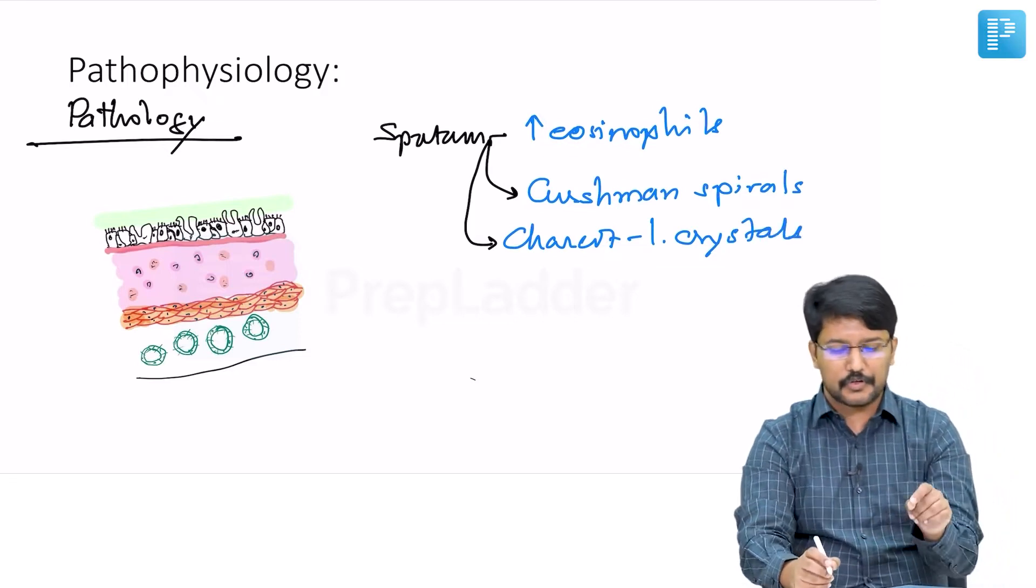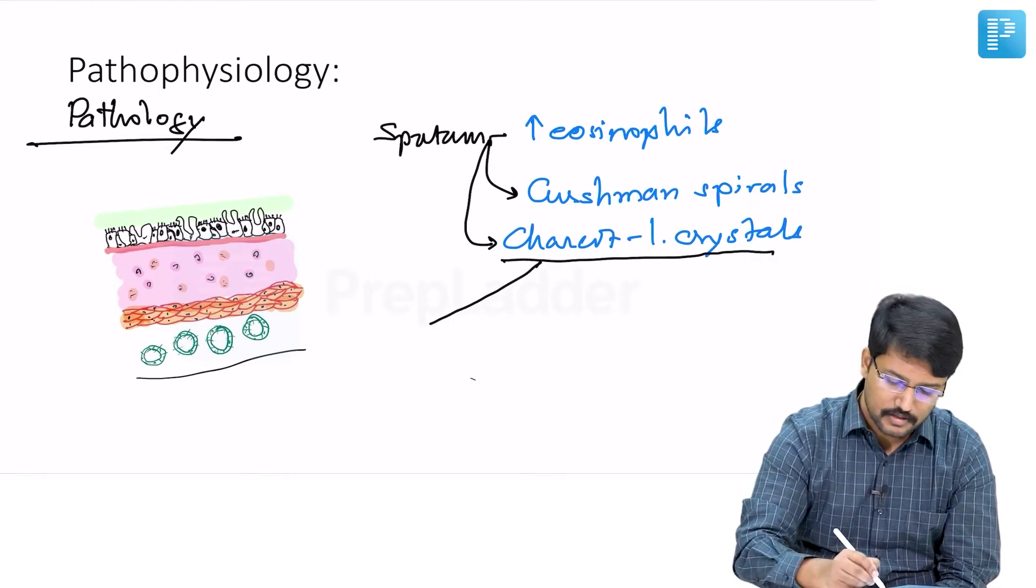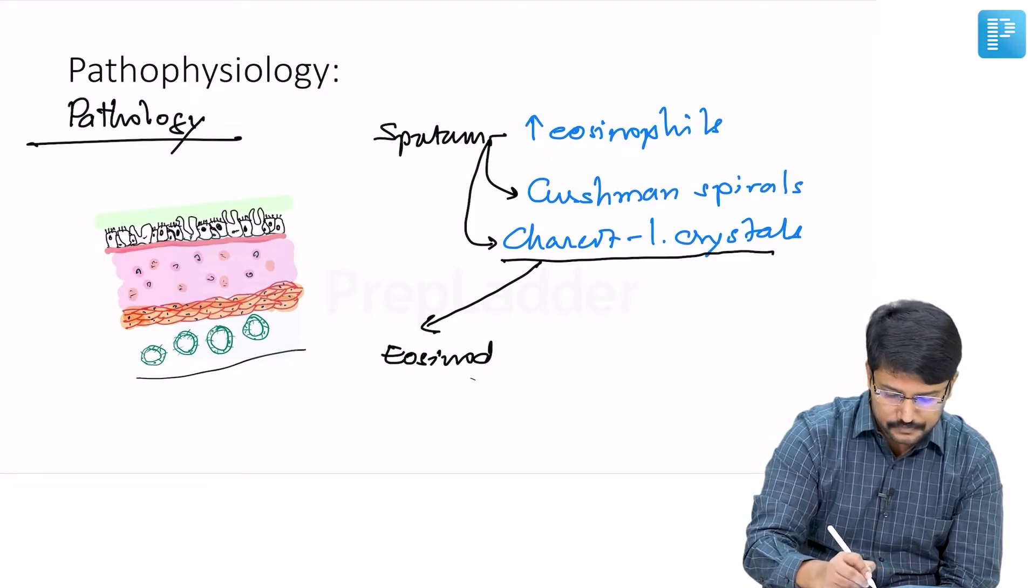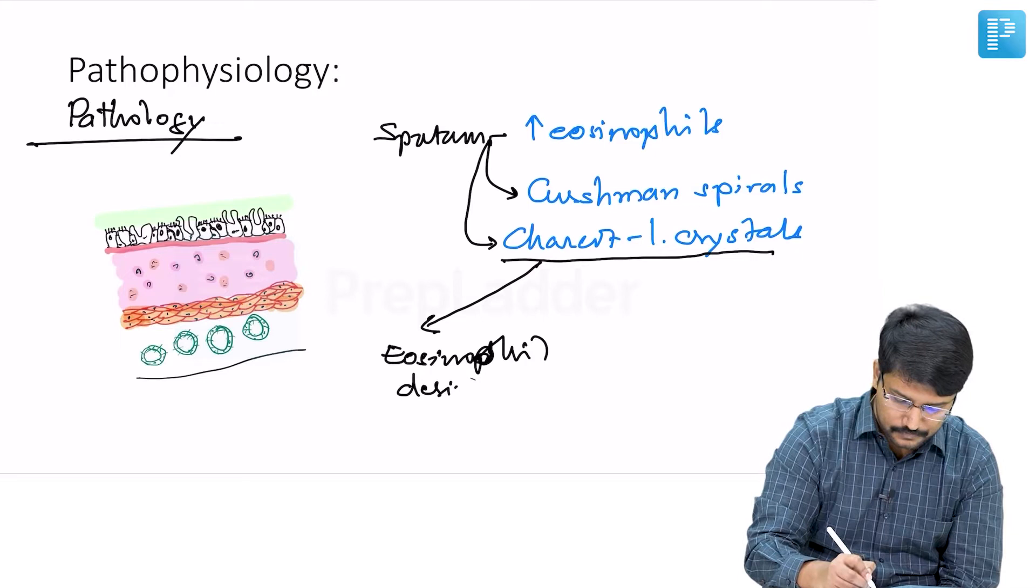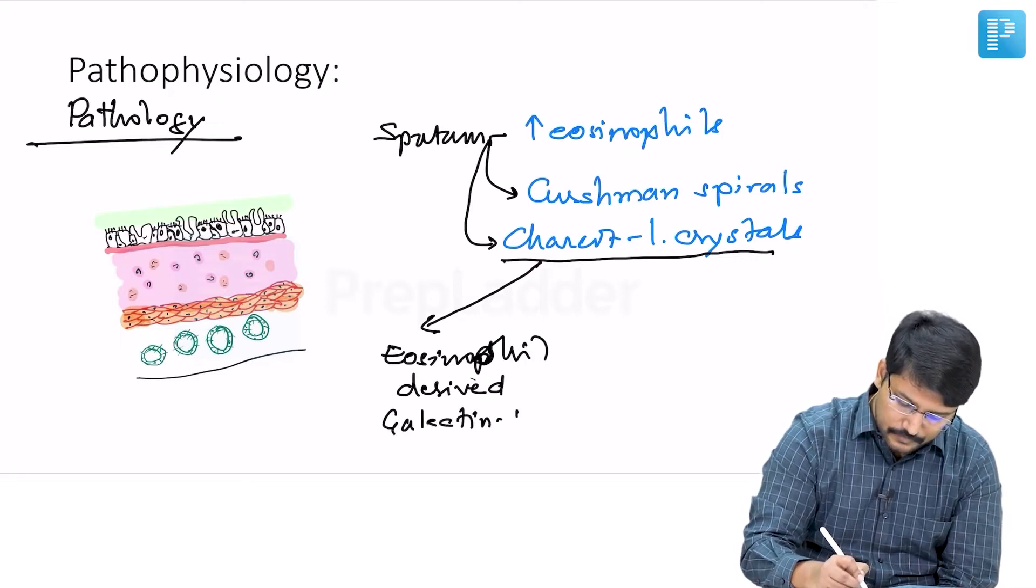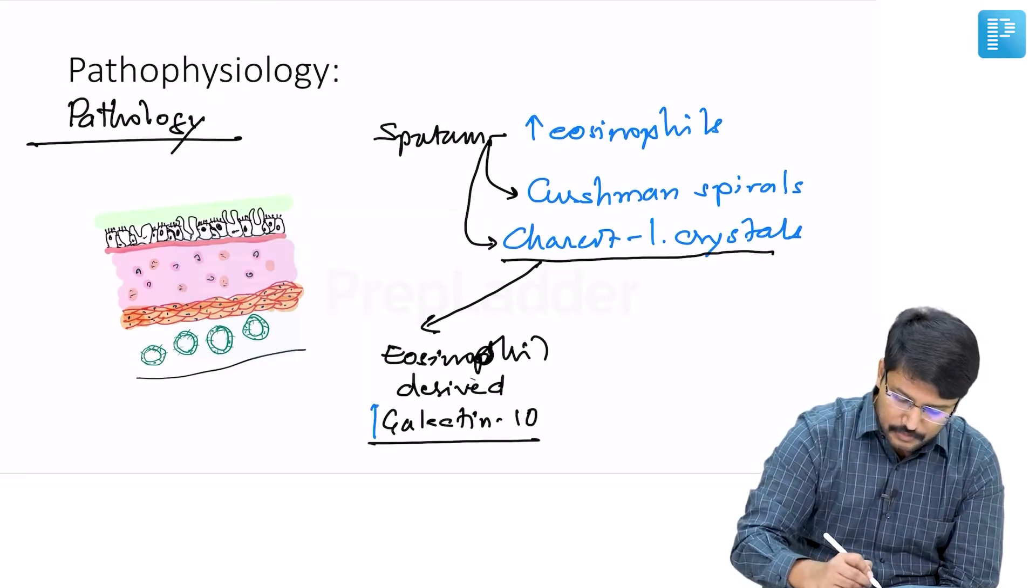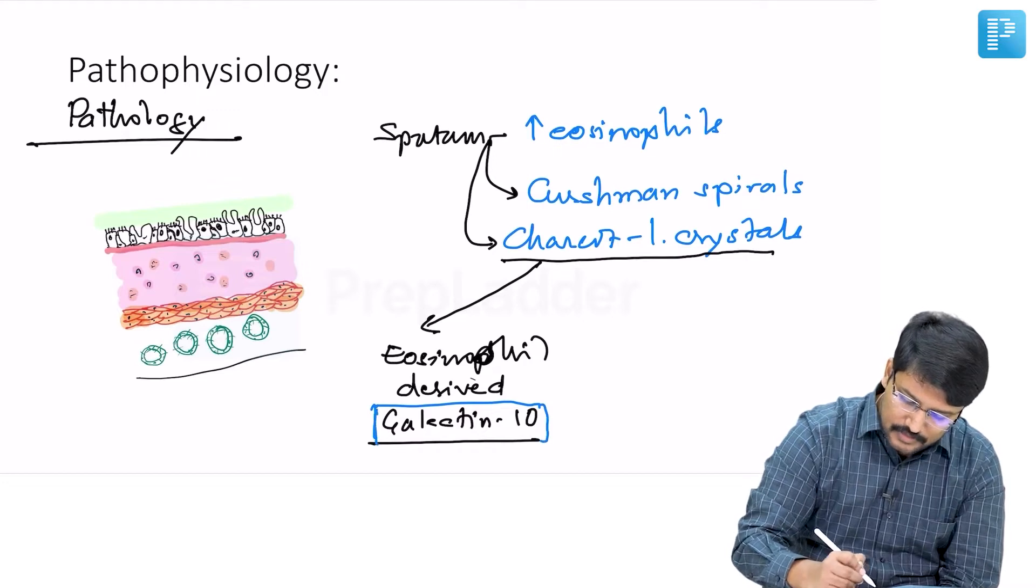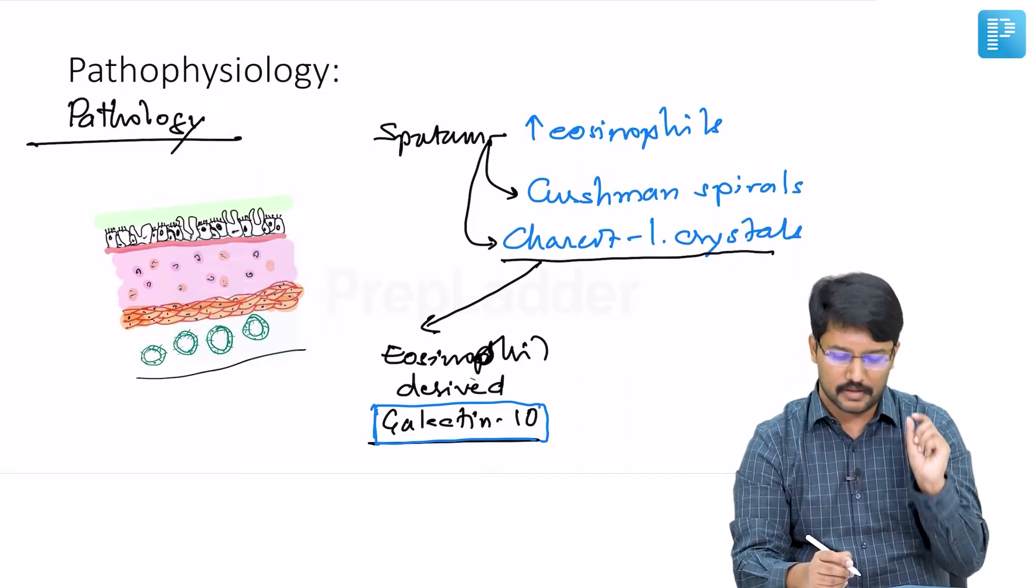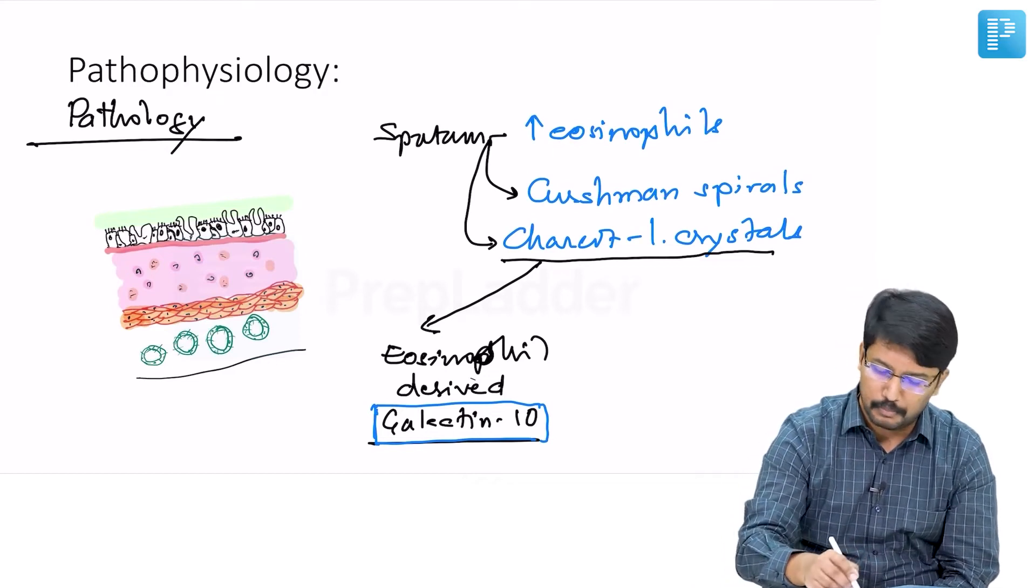A critical MCQ point that you must remember is that Charcot-Leyden crystals comprise eosinophil-derived galactin 10 protein. This galactin 10 is a protein derived from eosinophils, and the Charcot-Leyden crystals are made of that. These three eosinophil sputum findings are important from the MCQ perspective.